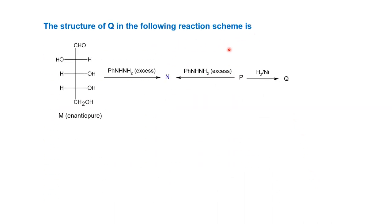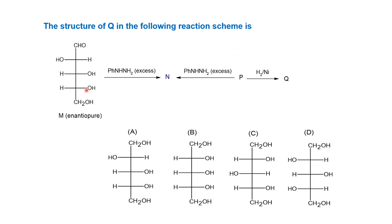The structure of Q in the following reaction scheme is — so there is a scheme of reaction given here and then a set of options. In this scheme, YM is shown as enantiopure and it is a carbohydrate — a 5-carbon carbohydrate. It is an aldopentose because it has an aldehyde group, and phenylhydrazine in excess is given and it forms YM. This is an osazone reaction. On the other side, P also gives the same osazone YM when treated with phenylhydrazine, and P on reduction with a nickel catalyst gives Q.